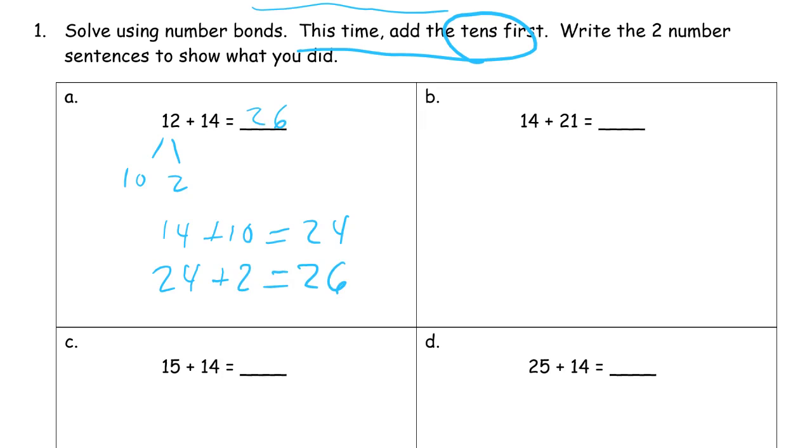And here the 14 is smaller, so that's 10 and 4. So I'm going to add the 10 first, and then add the 4, 35.